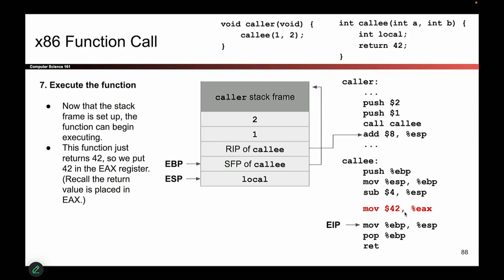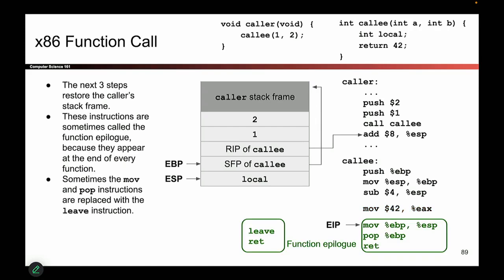Now the callee is all done and says it's time to return back to the caller. But all this stuff is messed up — EBP is not in its original place, neither is ESP, neither is EIP. I need to put all these registers back where I found them so that the caller can keep executing its own code like nothing happened. Now it's time to put everything back where it used to be. The instructions for doing that are sometimes called the function epilogue — every function we write ends with these three instructions.